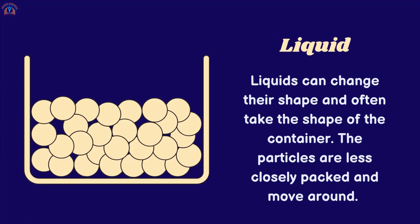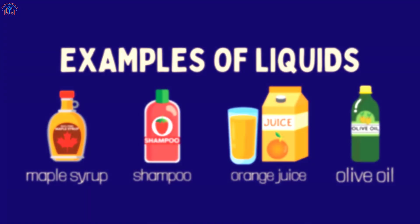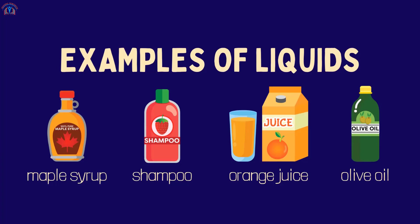Liquids can change their shape and often take the shape of the container. The particles are less closely packed and move around. Here are a few examples of liquids: maple syrup, shampoo, orange juice, and olive oil.